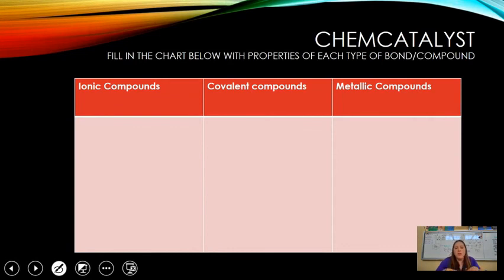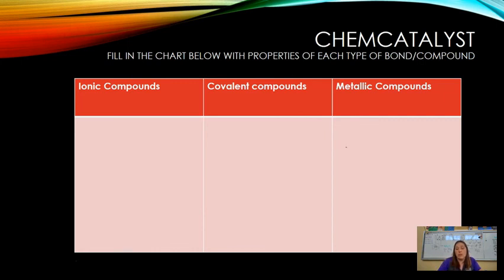I'd like you to make a chart and fill in the properties you know about ionic compounds, covalent compounds, and metallic compounds. I hope that was helpful. If you need any extra help, please don't hesitate to reach out.